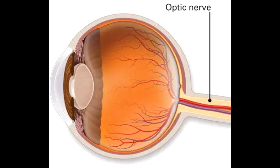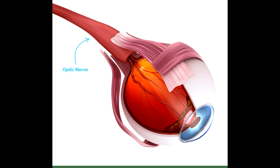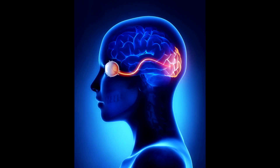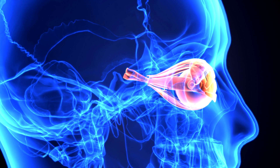The optic nerve is a bundle of more than one million nerve fibers that carry visual messages. You have one connecting the back of each eye to your brain. Damage to an optic nerve can cause vision loss. The type of vision loss and how severe it is depends on where the damage occurs. It may affect one or both eyes.